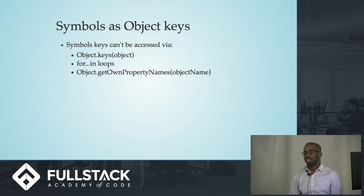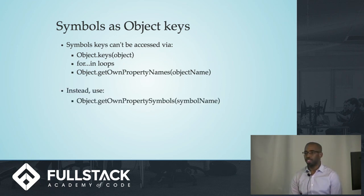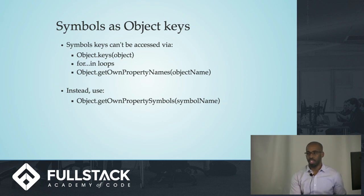Before ES6, only strings could be used as keys for objects. Now symbols can be used as keys as well, but you can't access them by the normal methods — you can't use Object.keys, for...in loops, or getOwnPropertyNames. You have to use getOwnPropertySymbols instead. This is one way for you to have a set of keys that are iterated differently on objects.